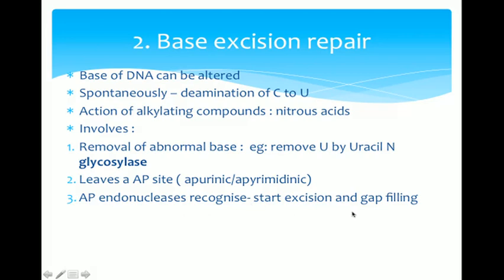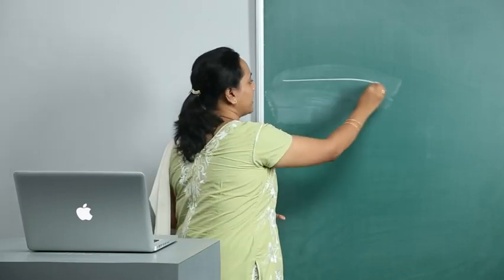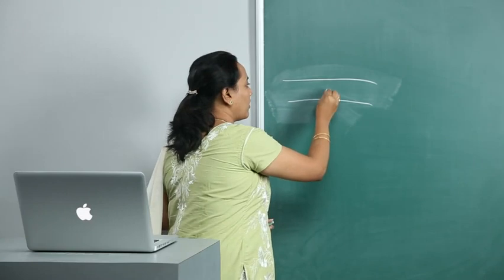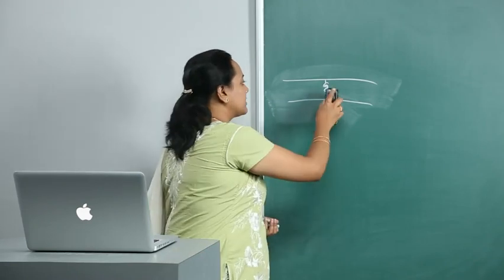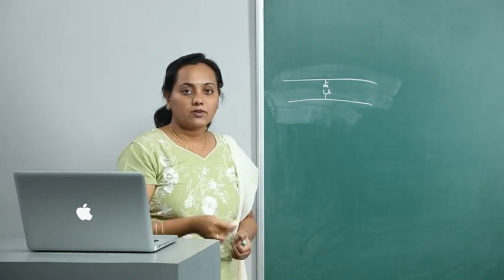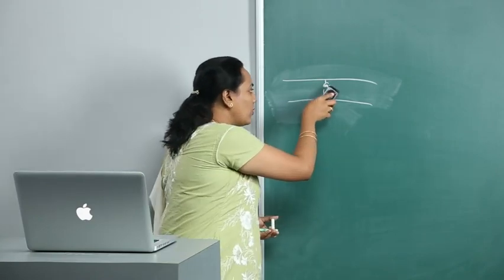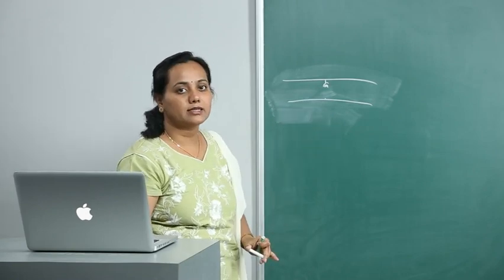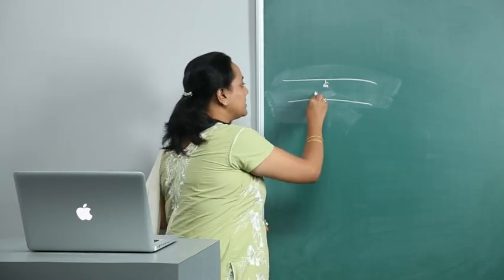AP endonucleases recognize the AP site and start the excision, making a cut 5' to the AP site. Let me clarify: there is a DNA double strand that originally contained a G-C pair properly matched. Due to deamination, C is converted to U. The first step is removal of only the base — no nick has taken place yet. That is why it is called base excision repair — only the base is removed.